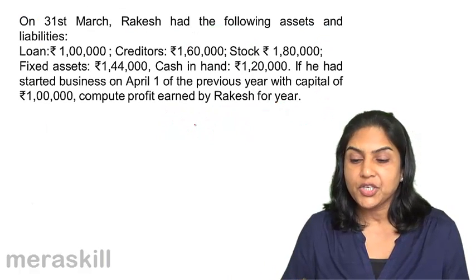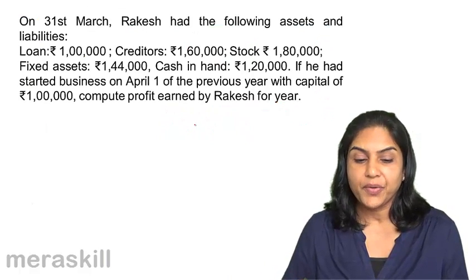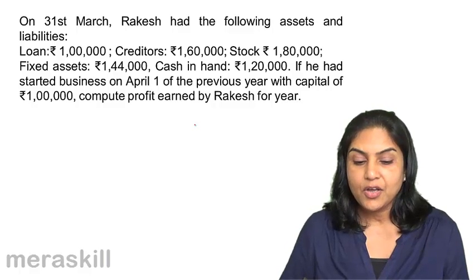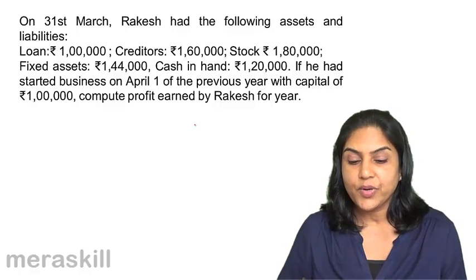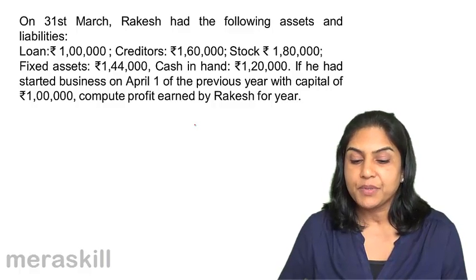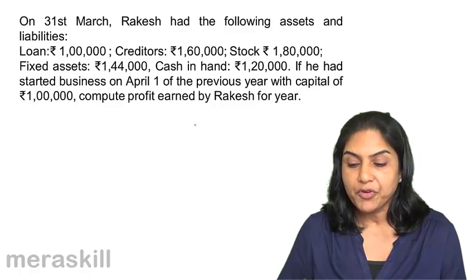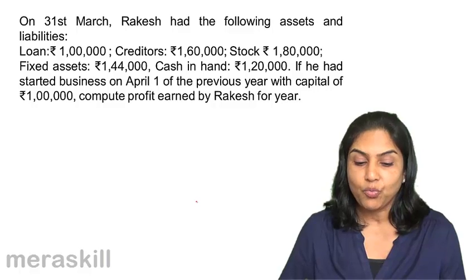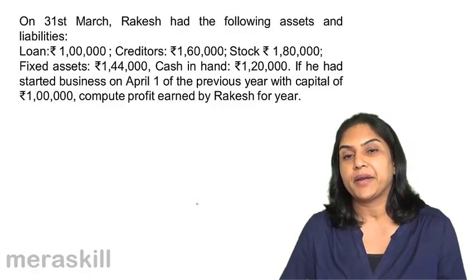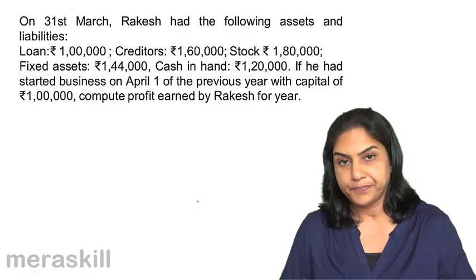Let us understand this with another example. On 31st March, Rakesh had the following assets and liabilities: Loan was 1 lakh, creditors 1 lakh 60,000, stock 1 lakh 80,000, fixed assets 1 lakh 44,000, cash in hand 1 lakh 20,000. If he had started the business on April 1st of the previous year with a capital of 1 lakh, compute the profit earned by Rakesh for the year.